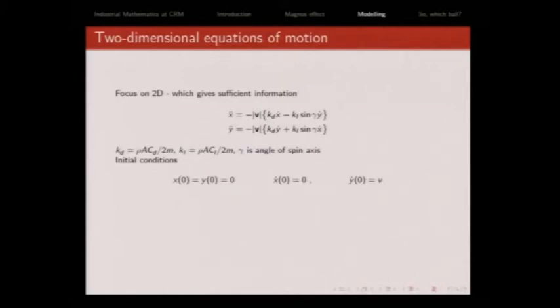Now, if I want to work out what makes a ball swerve, it's enough to look at 2D. I can't solve these equations analytically because this has got an x dot squared plus a y dot squared and a square root. I'm going to look at a situation where I start off with my kick at an origin. I don't kick it in the x direction. I kick it purely in the y direction. But I'm going to put spin on it as well. So that's the sine gamma term. Gamma is the angle of my spin axis in 2D. KD and KL, they're just the drag coefficients divided by the mass.